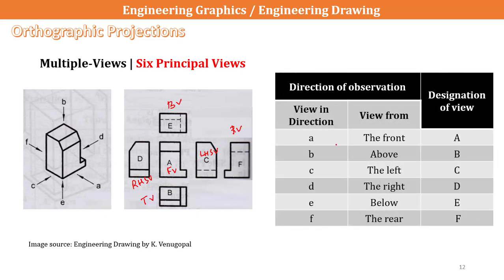In this table, all six views are summarized: A is designated as front, B is above as top view, C is the left side view, and so on. These designations help in clearly representing the six principal views of an object in engineering drawing.